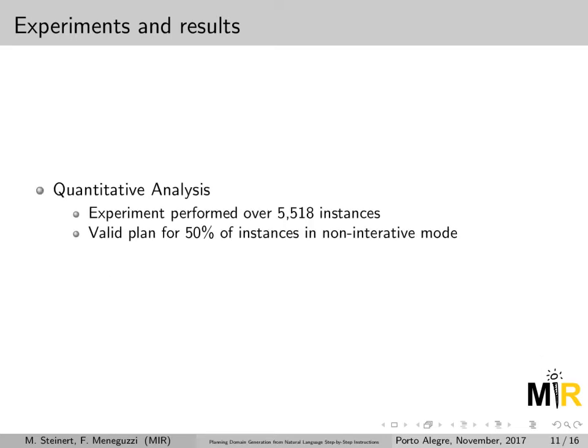So we start by performing a quantitative analysis, running over all instances in our dataset, where we were capable of providing a valid plan for 50% of instances running in non-interactive mode. What do I mean by a valid plan? Returning a plan — I'm not concerned here about plan quality or accuracy. It was capable of solving the problem of returning a valid plan.